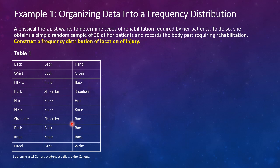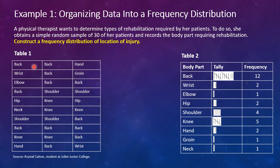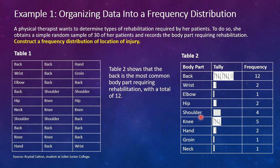One of the things that can really help us see this is putting it into a frequency distribution. This simply lists each category — for example, back — and shows how many responses we get. That's what you see here in Table 2. It's listed by body part and then the tally. A lot of times we'll put this from most to least, because if we sort the table by frequency from largest to smallest, we see that back, knee, and shoulder are the top three body parts requiring rehabilitation.